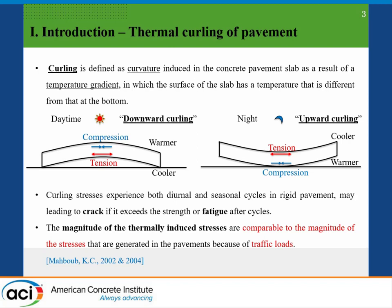First, let's give a brief introduction to curling for those without experience in pavement design. Curling is a curvature induced by temperature change. Consider a concrete pavement slab: during daytime the upper surface is heated, so it tends to expand and the slab becomes convex — we call this downward curling. During night the upper surface is cooled, giving an opposite deformation — upward curling.